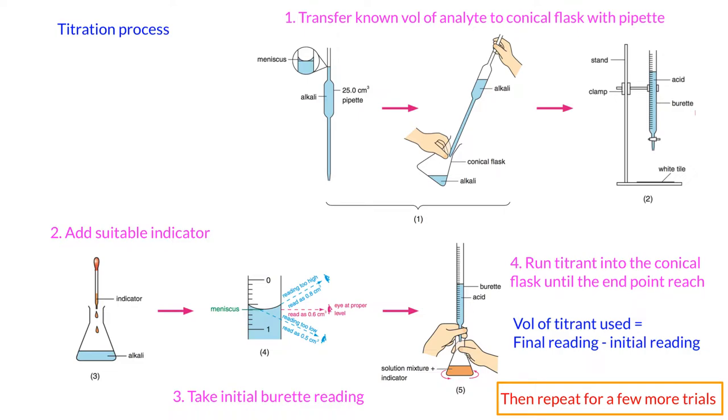And then you start the titrations. Run the titrant into the conical flask. You add this one into the conical flask, bit by bit, until the endpoint color reach. When you see there is a persistent color change, you can stop adding solutions from the burette. And the volume of titrant used will be equals to the final reading minus the initial readings. So the difference will be the volume of titrant used.